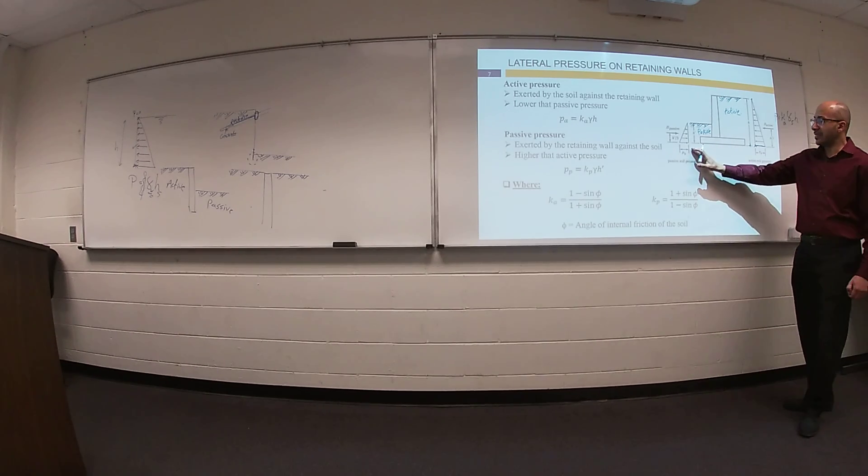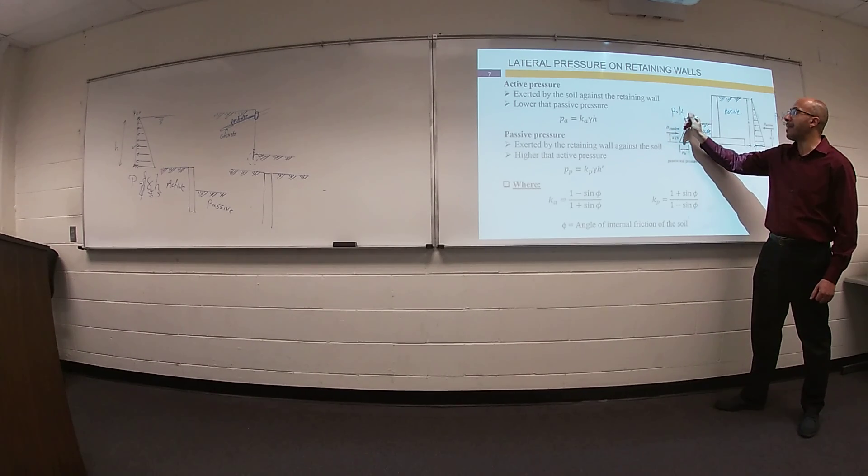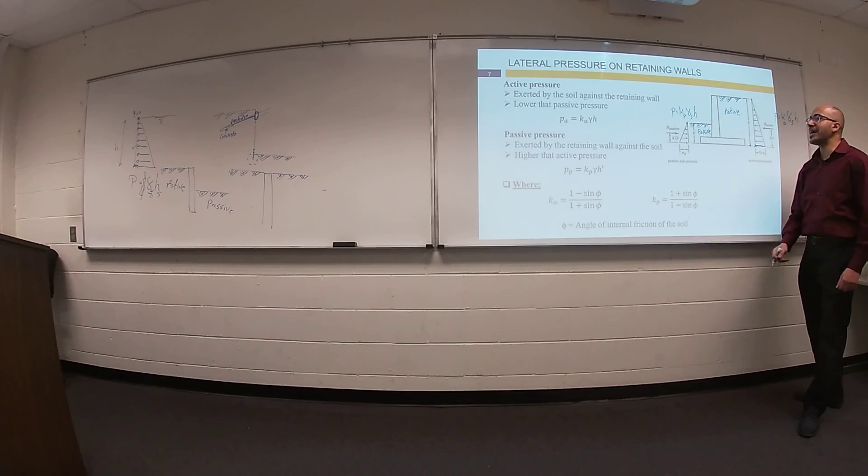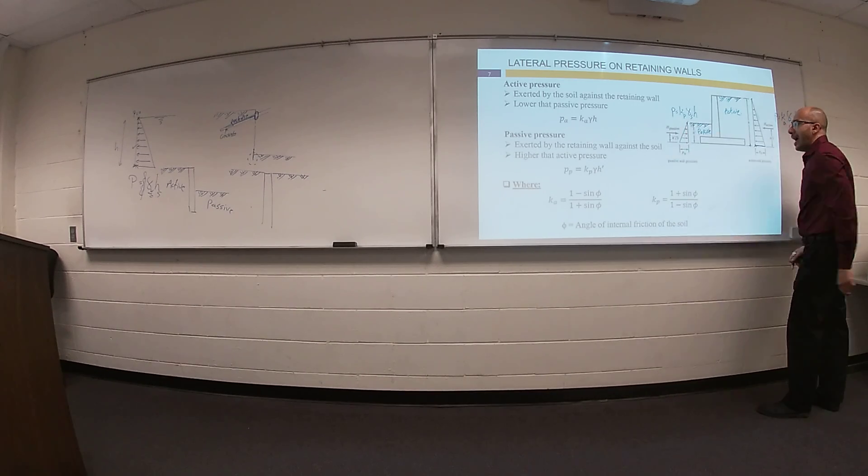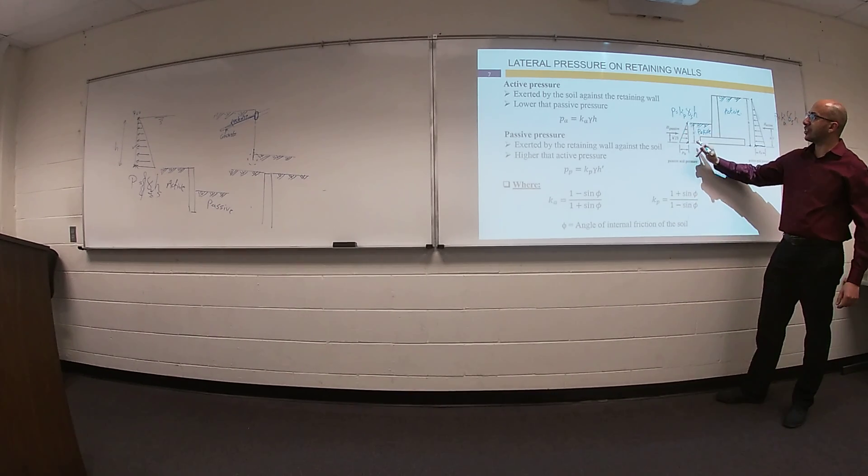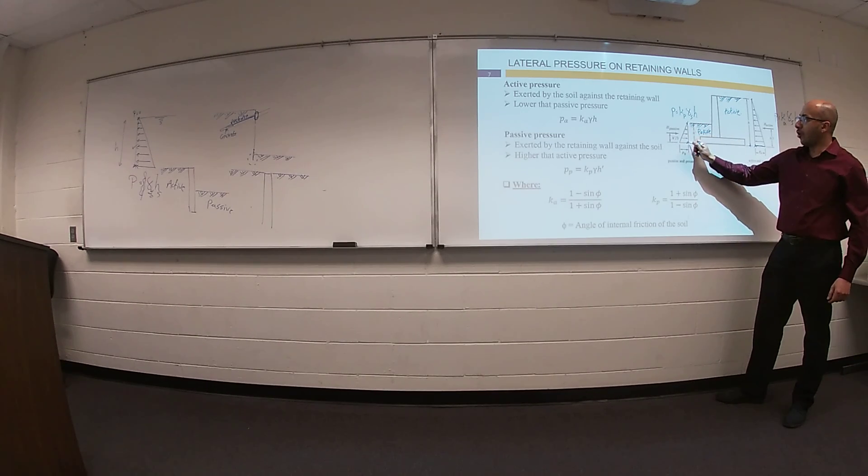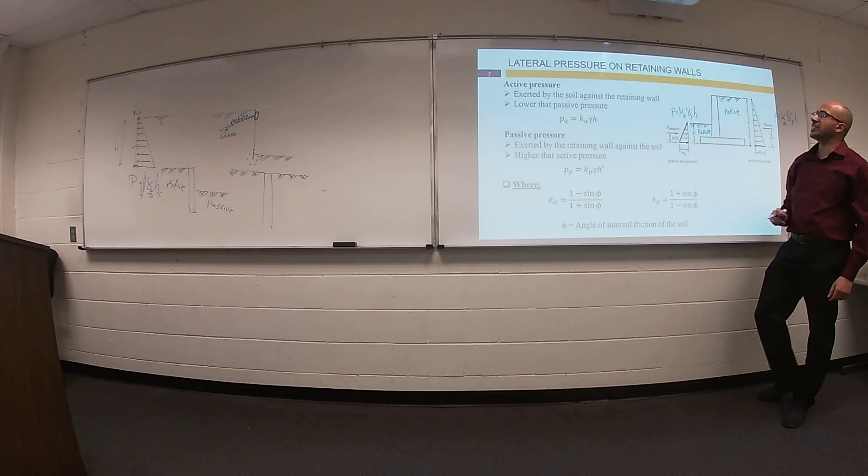For passive side, the same. Your pressure equals K passive times gamma soil times H. At this location, we don't have H at the same level of the ground surface. At this location, we have H from this point to this ground surface. If you draw a line in between the two points, you can get this triangle.